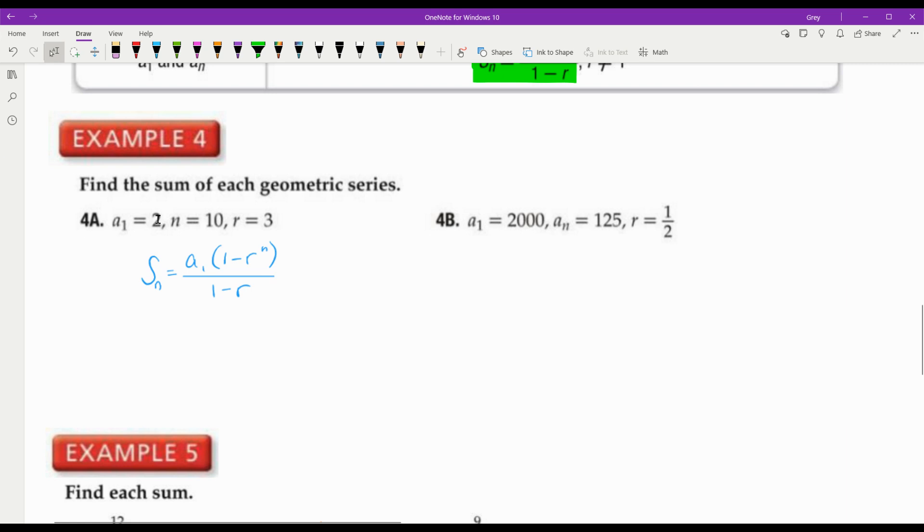My sum formula is A sub 1 times 1 minus r to the n over 1 minus r. They give me A sub 1 equals 2, and r is equal to 3, and n is 10. So that means S sub 10, A sub 1 is 2, r is 3 raised to the 10 because that's what n is. And that's going to be over 1 minus 3 because 3 is my r value. You all need to put this in your calculator right now. Pause it. Make sure you can do it correctly. Don't just go flying through this video and say, oh yeah, I know how to do this. Because my answer is 59,048. But you got to be able to use that calculator.